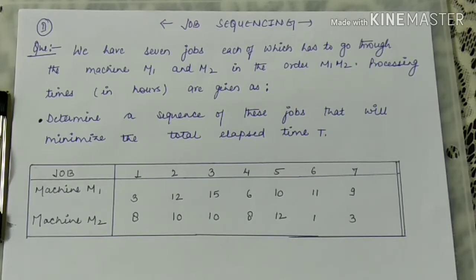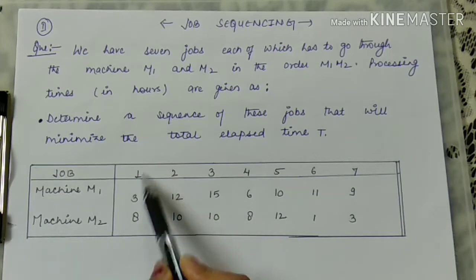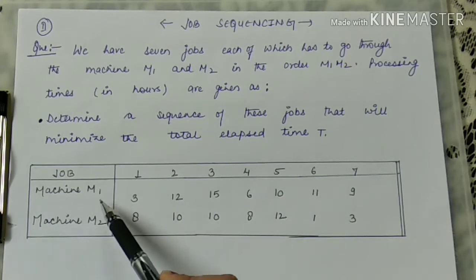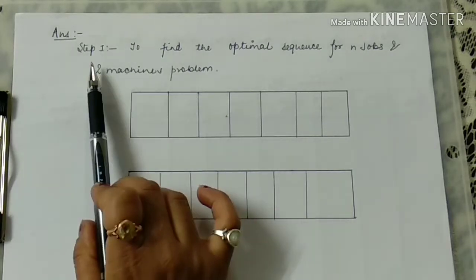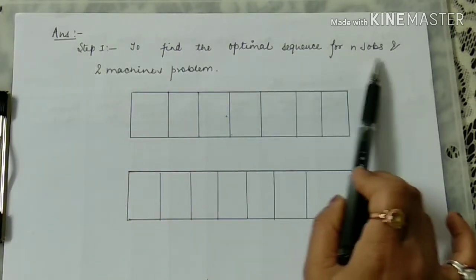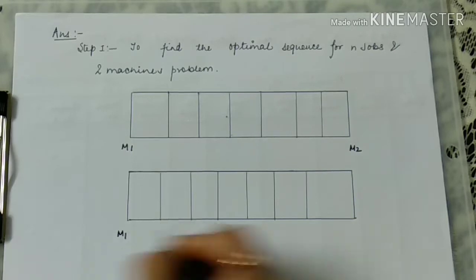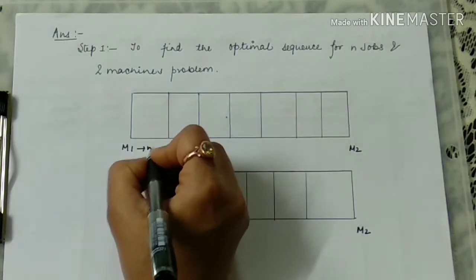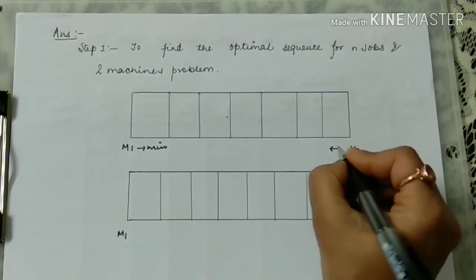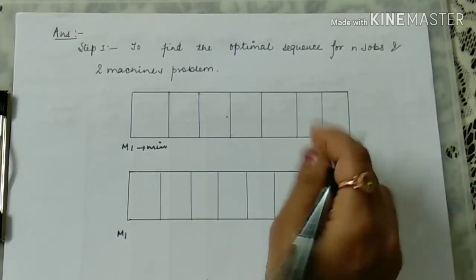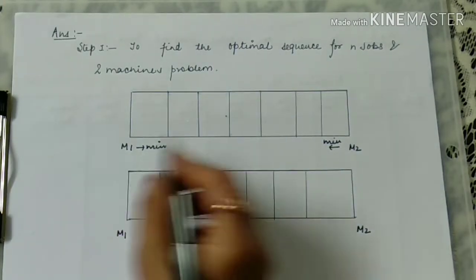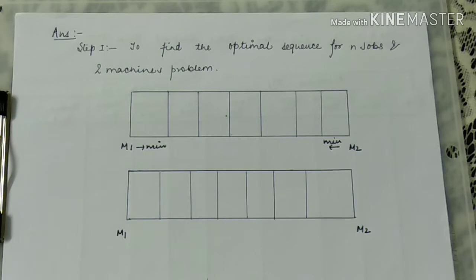In Johnson's method, I told you that first you have to find the optimal sequence. For the optimal sequence, you have to find the job which requires the minimum time on the first machine. For that, you make boxes like this. First step is to find the optimal sequence for n-jobs and 2-machines problem. M1 minimum jobs are written left to right, and M2 minimum jobs are written right to left.